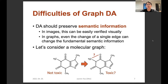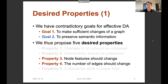However, there are difficulties for graph data augmentation, because the basic requirement for DA is to preserve the semantic information of an example. In images this can be easily verified visually, as in the previous example of a dog, but in graphs this is not easy. Even the change of a single edge in the graph structure can change the fundamental semantic information. For example, with caffeine as the left compound, we don't know what will happen if we add or remove a single edge uniformly at random between any two elements.